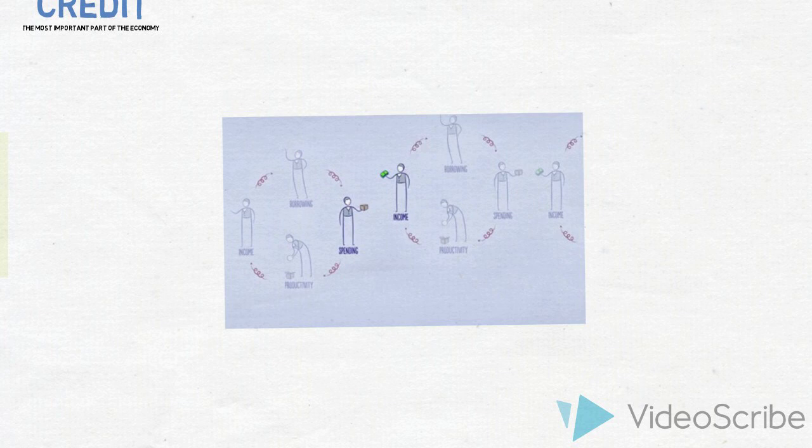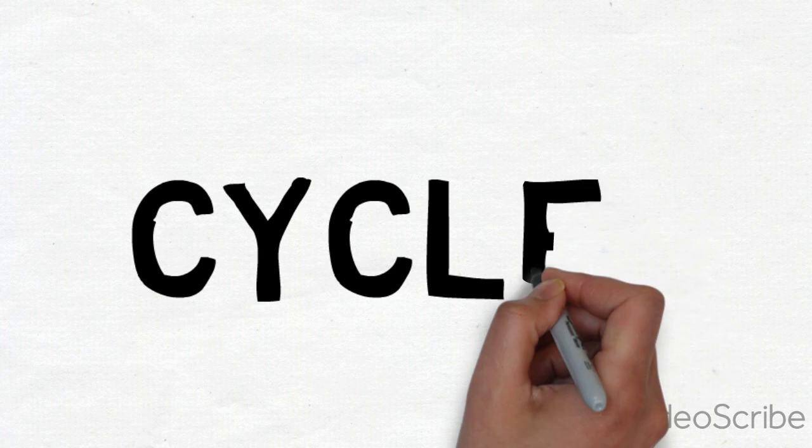Increased income allows increased borrowing which allows increased spending. So we have cycles.